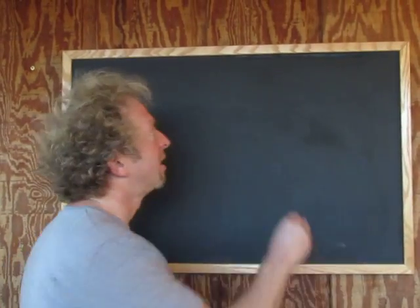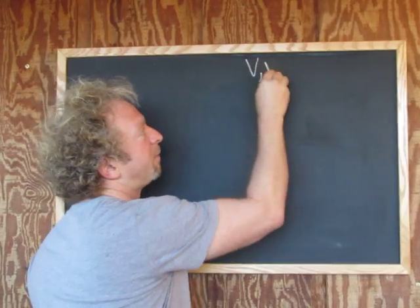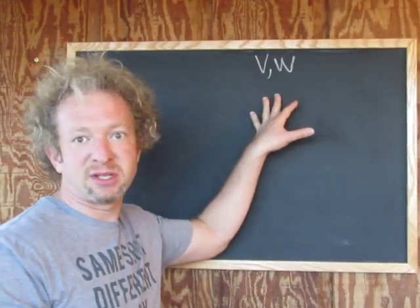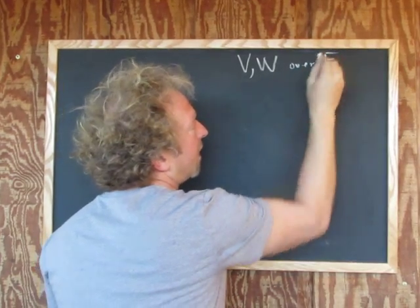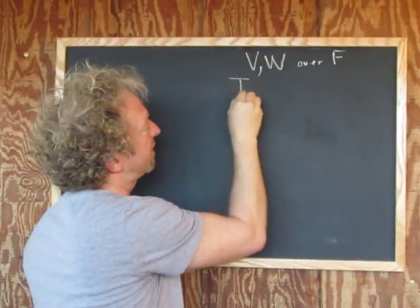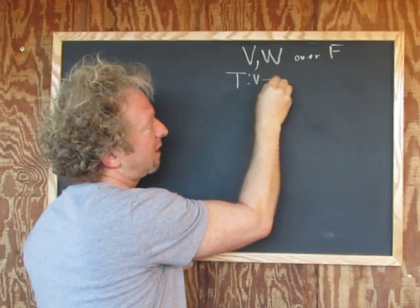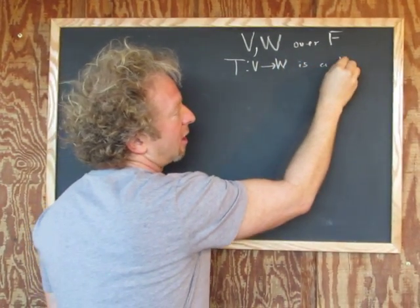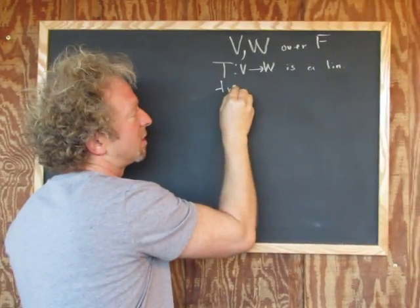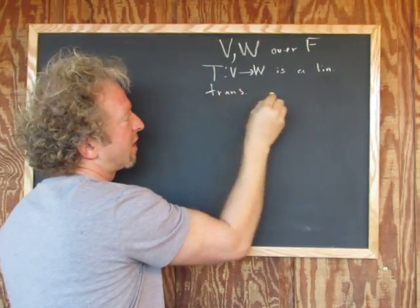So first, let's define what that is. We're going to let V and W be vector spaces over a field F. And we're going to say T, capital T, from V into W is a linear transformation if...